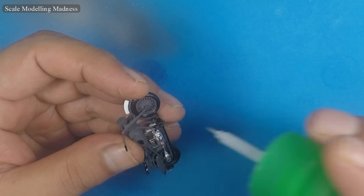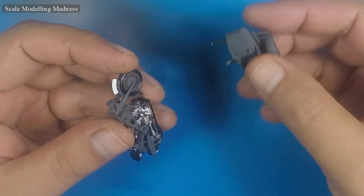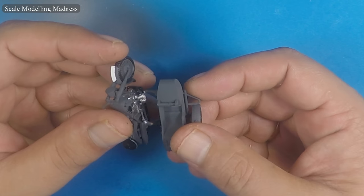The sidecar is painted German grey as are the wheels. Once again, the tires were hand painted and the sidecar was ready to be glued in place.